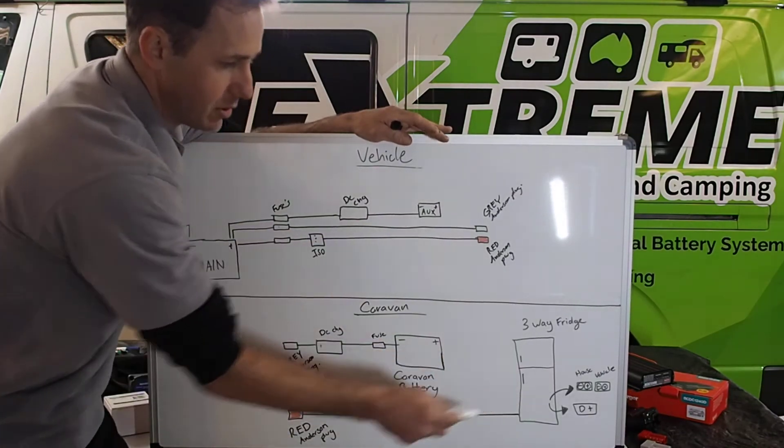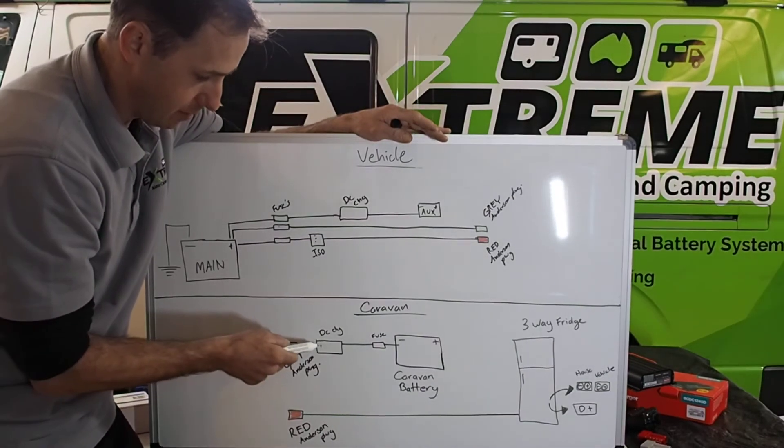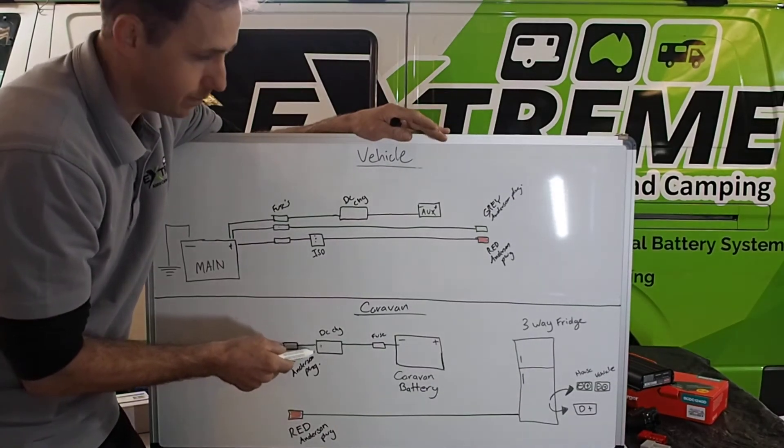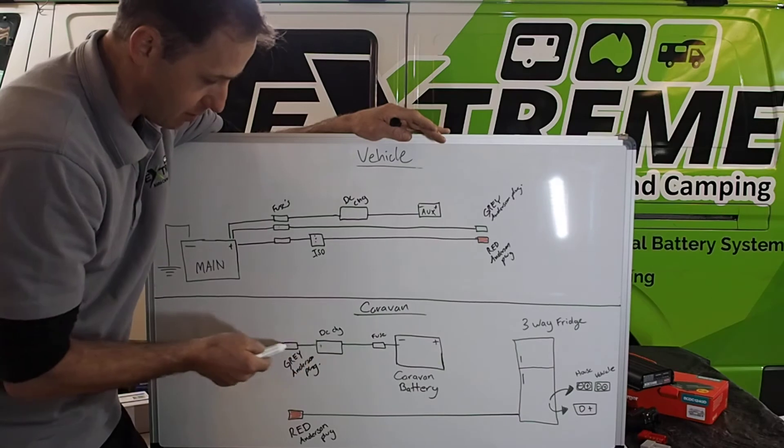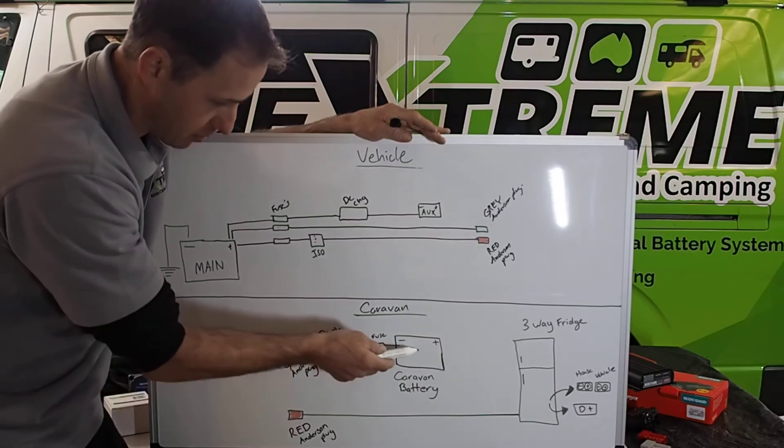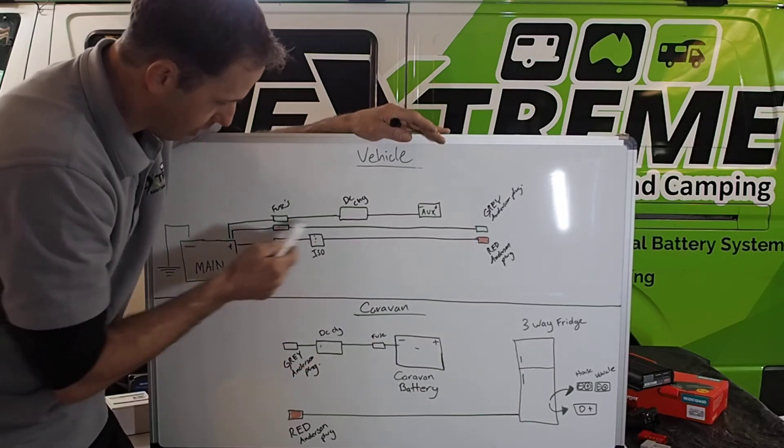So when this thing is pulling 17-plus amps, the supply for this hasn't been affected. When this DC charger is in bulk mode supplying 25 amps, its line will not be affected.